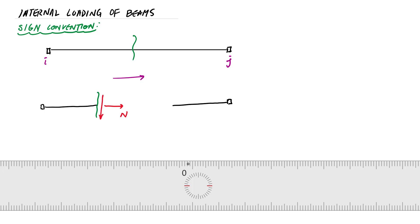Any shear force pointing down is considered positive, and any moment causing compression at the top is considered positive. It's equal and opposite on the right side of the cut. This is our positive internal sign convention.